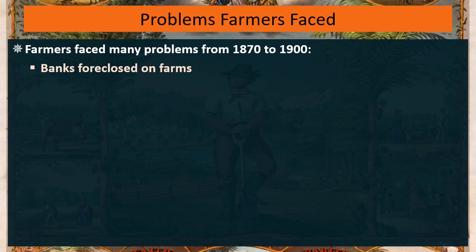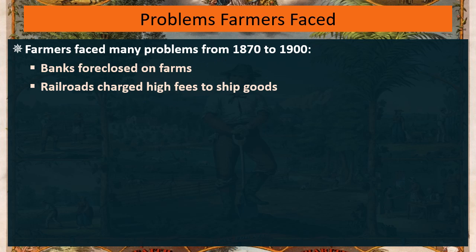Farmers looked at that situation and thought, 'If only I had more money, I could pay for my farm and pay my bills.' Railroads charged high fees to ship goods — when you took your corn down to the railroad to ship it to market, you would be paying a lot of money. And if money is not circulating, how are you going to get the money to pay those shipping fees?